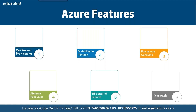Next is scalability in minutes, which means you can scale up or scale down resources in just minutes depending on your requirement. For example, if you build a Windows Server 2019 virtual machine with 2 GB of RAM and later realize that's too little, you can scale up to 8 GB or more — or scale back down just as easily.